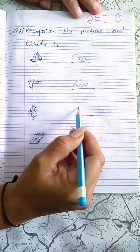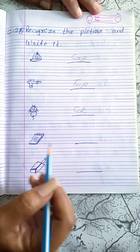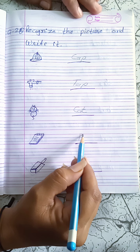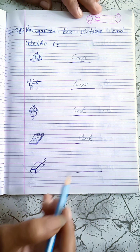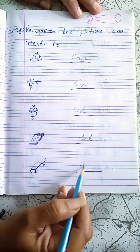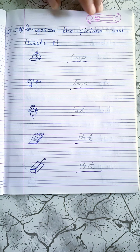Third, cat: C-A-T, cat. Pad: P-A-D, pad. Bat: B-A-T, bat.